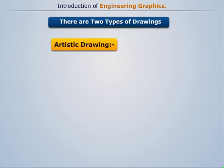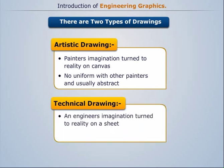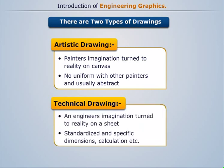Artistic Drawing is done by painters and it is not uniform with other painters. Technical Drawing is done by engineers and it has certain standards, dimensions and calculations.